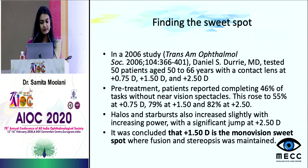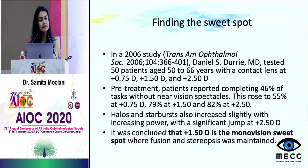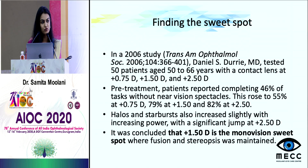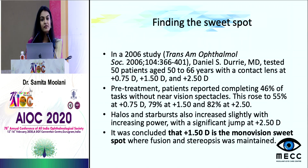Some studies have explored what is the ideal difference between the two eyes in monovision. At our center, we usually aim for a plus 1.25 diopter difference: the dominant eye is given plano and the non-dominant eye is given minus 1.25. If after your first surgery you have not achieved plano, do not continue to plan monovision for that patient.